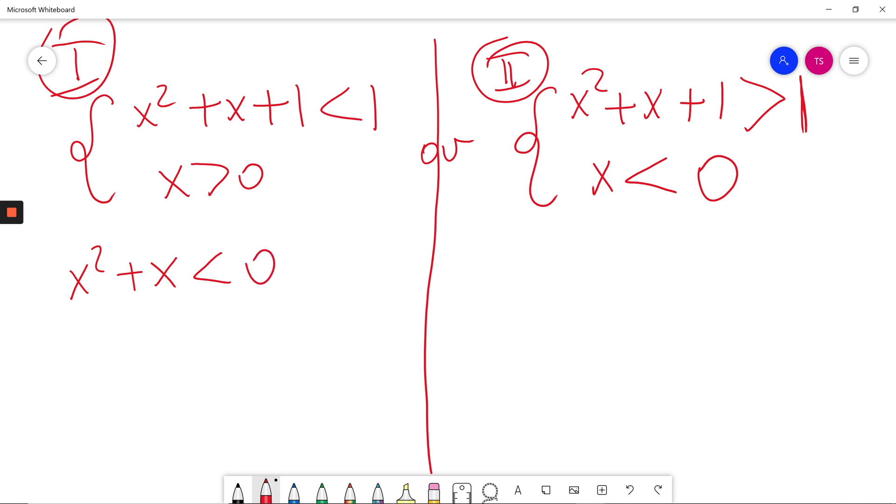To solve the inequality, first I'm solving the equation: x² + x = 0. I will factorize x. So x = 0 or x = -1.